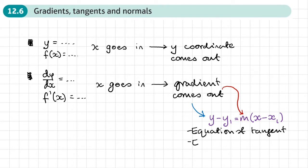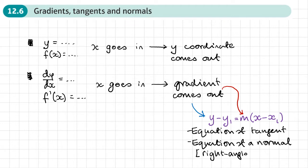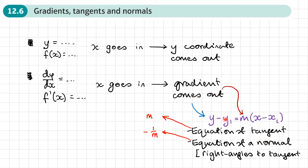We can also find the equation of a normal. A normal is perpendicular — at right angles — to the tangent. So if the gradient of the tangent is m, the gradient of the normal is negative 1 over m. A normal is just a straight line, so by using y minus y1 equals m times x minus x1, we can find the equation of a normal. The m will be negative 1 over m rather than the value from dy/dx.